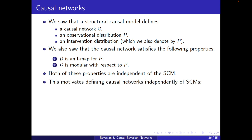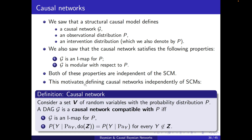This motivates defining causal networks independently of SCMs. So a causal network can be defined in this way. Consider a set V of random variables with probability distribution P. A DAG G is a causal network compatible with P if and only if: first, G is an IMAP for P, and secondly, it's modular.